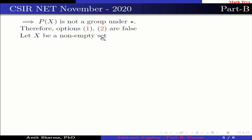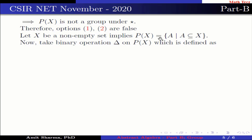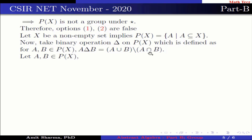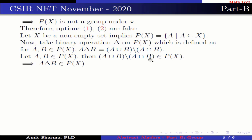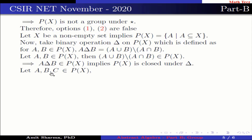Now let X be a non-empty set, which implies P(X) contains elements A such that A is a subset of X. Take the binary operation delta on P(X), defined as: for A, B belonging to P(X), A delta B equals A union B excluding A intersection B. Now, A delta B belongs to P(X) because A union B is a subset of X and A intersection B is also a subset of X, which implies A union B excluding A intersection B is also a subset of X. Therefore P(X) is closed under the binary operation delta.